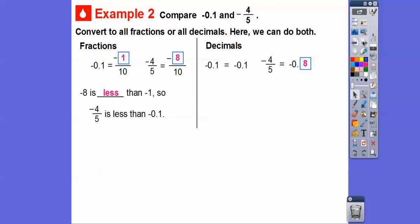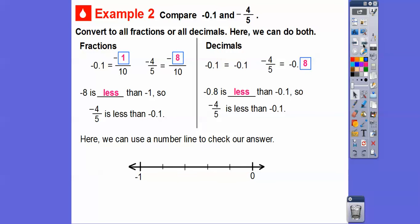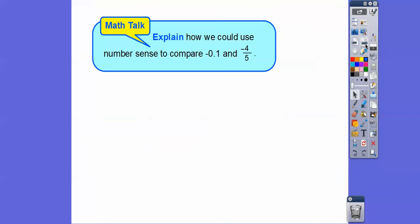We can also use a number line. Here's 0 and here's negative 1, going by two tenths. Negative 0.1 — that's one tenth — is plotted close to zero. Negative 4/5 equals negative 8/10 and is plotted further left. The one to the left is smaller, so negative 4/5 is less than negative 0.1. My favorite is the number line.